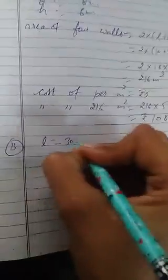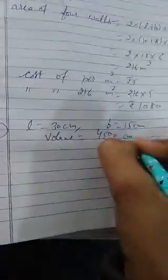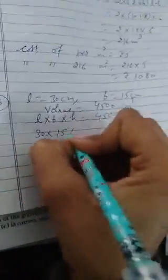Length 30 centimeter, breadth 15 centimeter. Volume is equal to 4500 centimeter cube. And we know the formula of volume L into B into H is equal to 4500. Fill the values. 30 into 15 into H equals 4500.